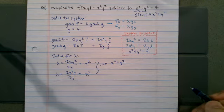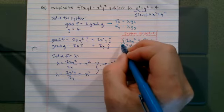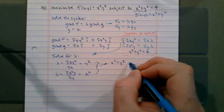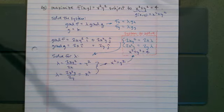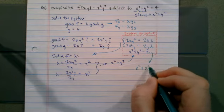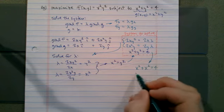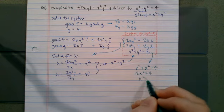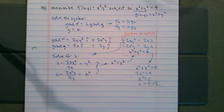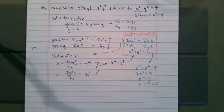Now we can plug this into the constraints. So we took these first two equations, eliminated the lambda, and now we're going to take the results and put that back into our constraints. So that's going to end up with x squared plus x squared equals 4. And so we get x equals plus or minus the square root of 2. And so that tells us that y is equal to plus or minus the square root of 2 as well.